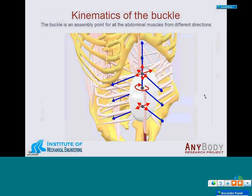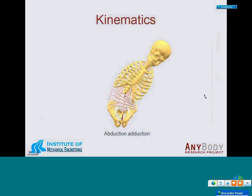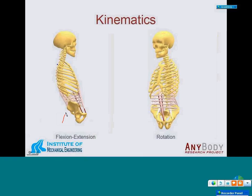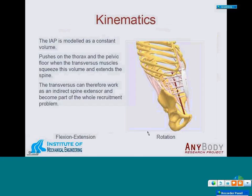The so-called buckle segment mimics the rectus sheath and serves as an assembly point for abdominal muscles from different directions. The discs can move along the spine depending on what movement you are doing. Here you see a picture of a person doing a lateral flexion, and the discs move along with this movement, giving a natural representation of how the transversus muscle moves along the spine. The same applies to flexion-extension and rotation.